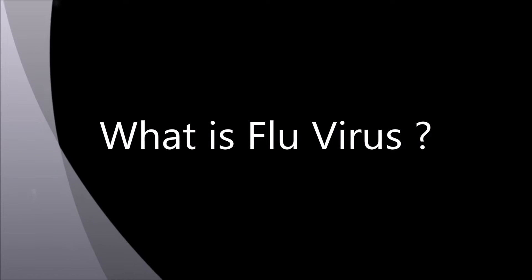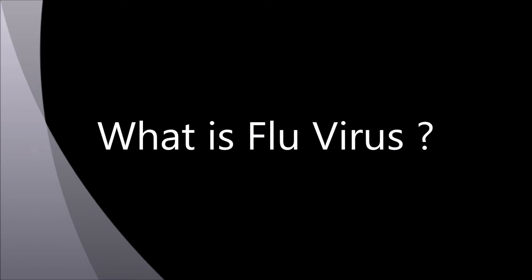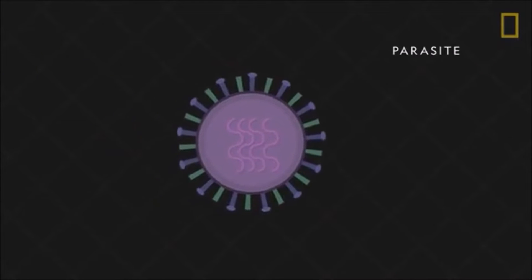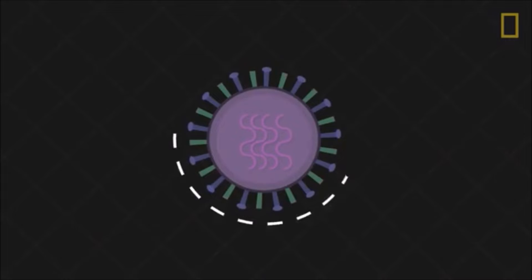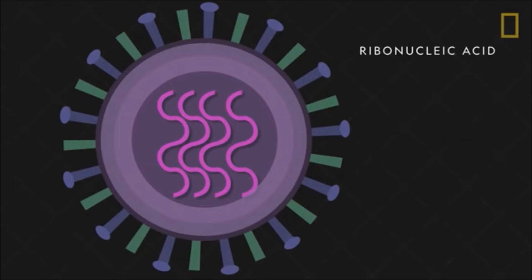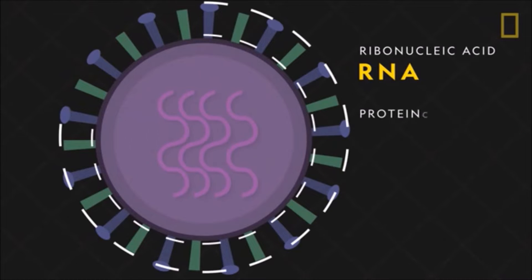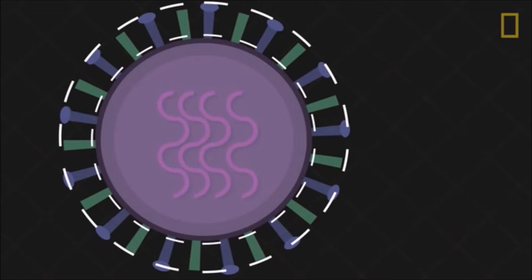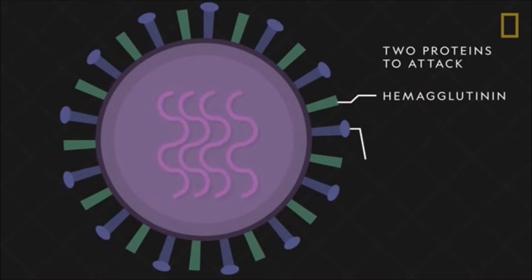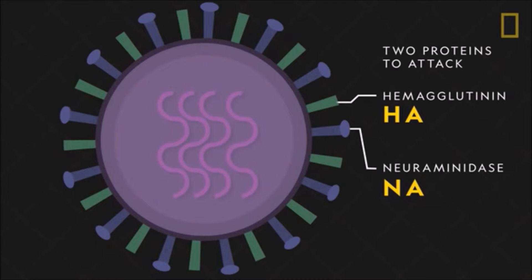What is flu virus? Like other viruses, the flu virus is a parasite. The viral agent itself, called a virion, is made of a ribonucleic acid, or RNA, surrounded by proteins. The flu virus uses two proteins to attack its host: hemagglutinin and neuraminidase, or the HA and NA proteins.